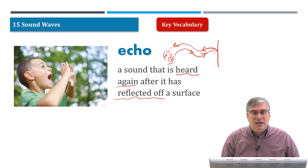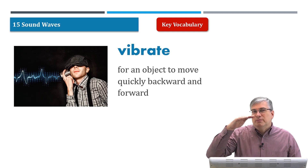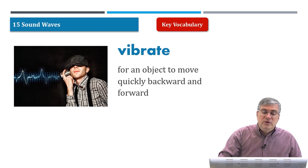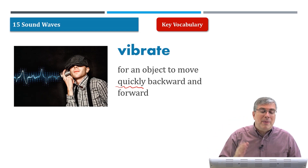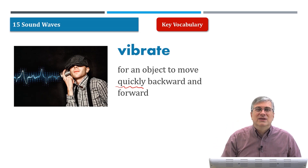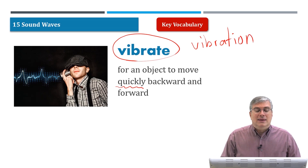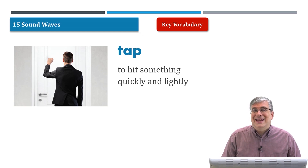'Vibrate' means for an object to move back and forth quickly. Vibrations usually happen very quickly — an object moves fast backward and forward, or up and down. It's just moving like this. 'Vibrate' is a verb; 'vibration' is a noun. It's important to know that word because we're talking about how you hear sound — we'll come back to vibrate.